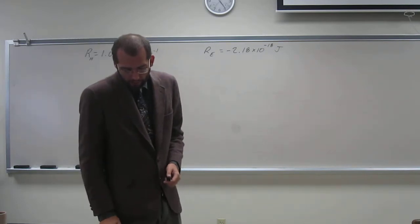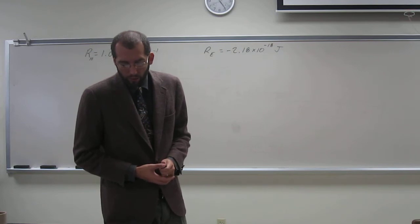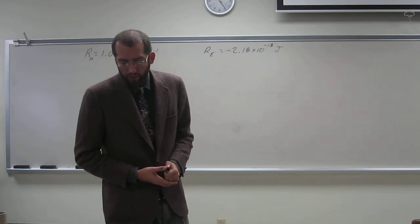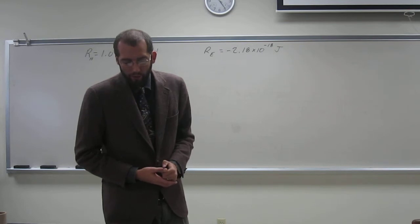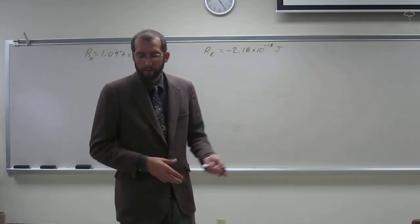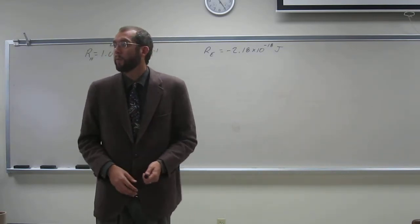So it says, what is the energy difference in kilojoules per mole between the first and second shells of the hydrogen atom if the lowest energy emission in spectral series with N2 equals 1 and N1 equals 2, and then it gives you a wavelength. But I want to calculate that wavelength, okay?